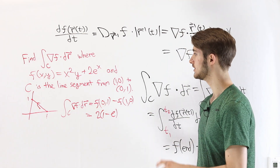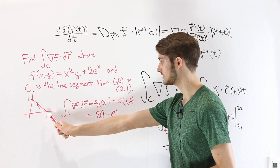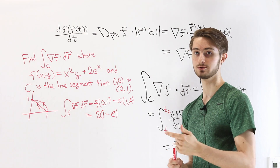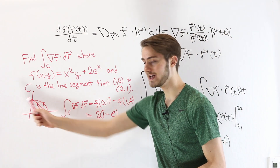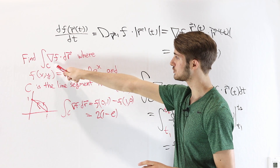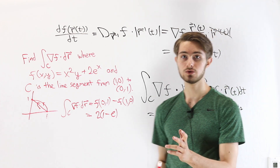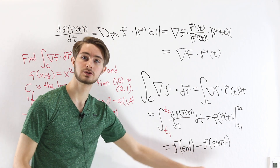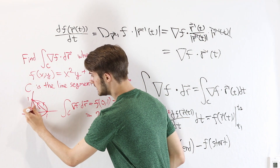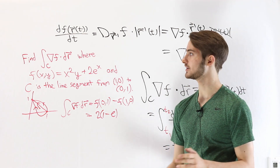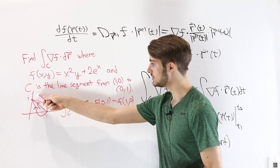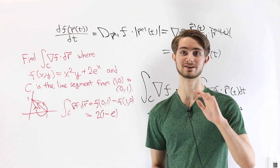The next variation: what if instead of the line segment from (1, 0) to (0, 1), we looked at the arc of a unit circle connecting the same two points? Our path is different, but the start and end points are the same. The gradient theorem tells us that only the end point and start point matter, so no matter what the curve is in the middle, we get the same result of 2(1 − e) for any curve connecting those two points. Because of that, when a vector field is the gradient of some function, we say it is path independent — no matter what path we choose between two points, the line integral gives us the same value.